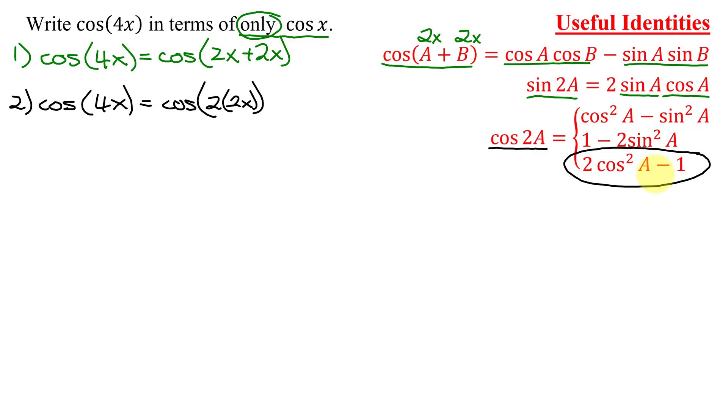But in this case, I have to be careful. I'm going to let a equal 2x. So I'll have 2 times a, which is 2 times 2x. So now, what is the cosine of 2 times 2x? Well, it's going to be 2 cosine squared, instead of a. Remember, a is going to be 2x minus 1.